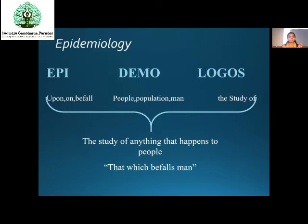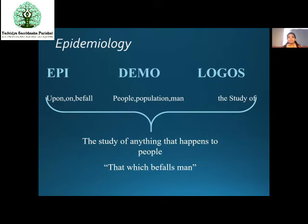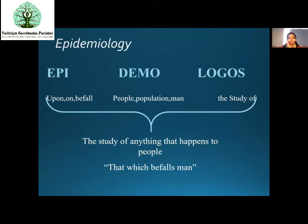The term epidemiology is derived from three Greek terms: epi, demo, and logos. Epi means 'upon' or 'befall.' Demo, as in demography, means people, population, or mankind. Logos means study. In totality, epidemiology means the study of anything that happens to people — that which befalls mankind. It might be a disease, a habit, or anything.